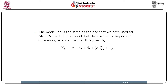Now let us look at the mathematical form of this model. The model looks the same as the one used for the ANOVA fixed effects model but with some important differences. The model is given by y_ijk equals mu plus alpha_i plus beta_j plus (alpha-beta)_ij plus epsilon_ijk, where alpha and beta are the two effects of the two treatments, (alpha-beta)_ij represents the interaction, and epsilon_ijk is the error term.